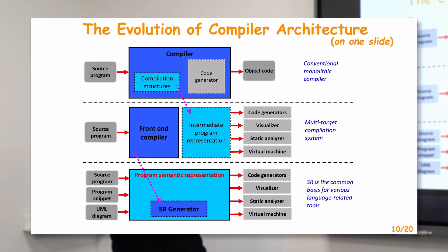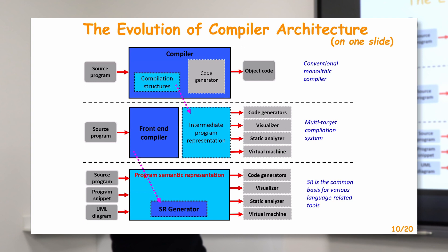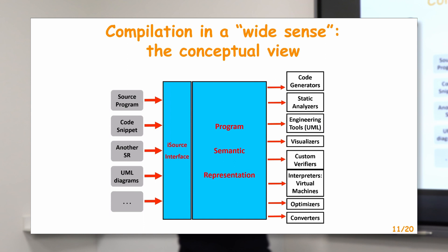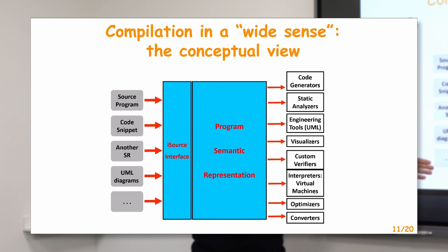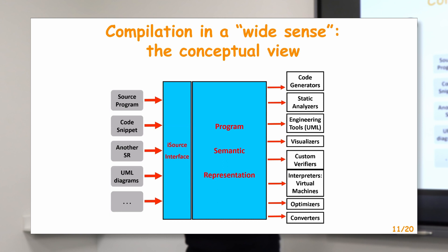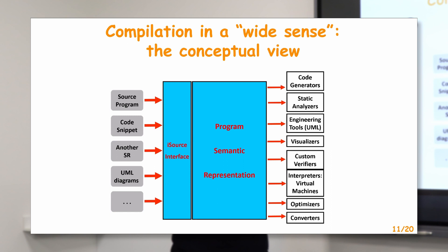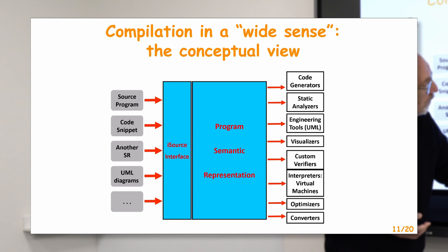This is the same picture in a slightly different, more conventional way. We have the program semantic representation — a complicated structure — together with the interface. Different kinds of source code representation can serve as input to this complex, and a series of clients perform various useful actions: code generation, static analyzers, virtual machines, optimizers, et cetera.